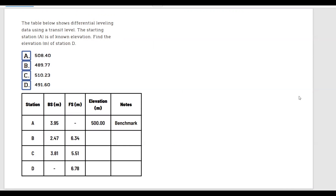We're given the backside — if you have worked on this kind of example, you may know that we add the backside distance. And for the foresight distance, we usually subtract it. We are given the elevation at station A, and this is called a benchmark. A benchmark is a reference point in measuring altitude.